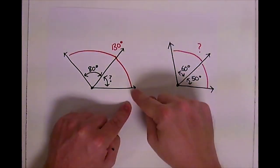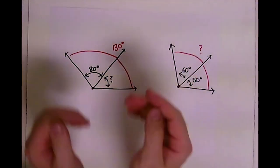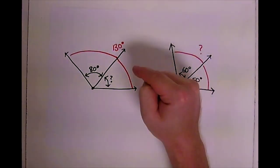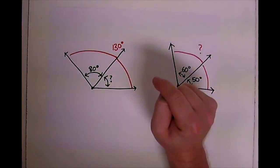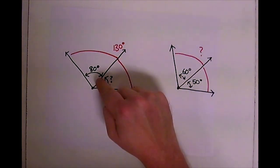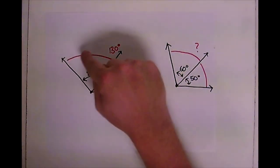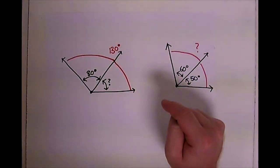The red line is how much all of that angle is together. So we need to figure out if we need to add or subtract to find that question mark. We know that this angle is 80 degrees and we know that the whole thing is 130 degrees.